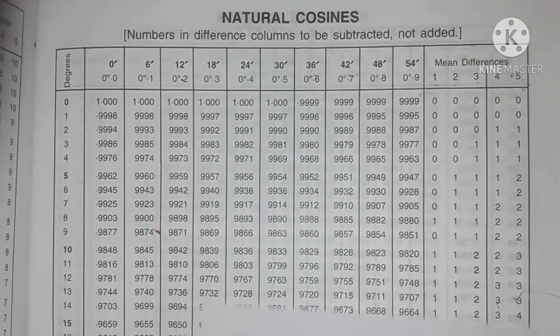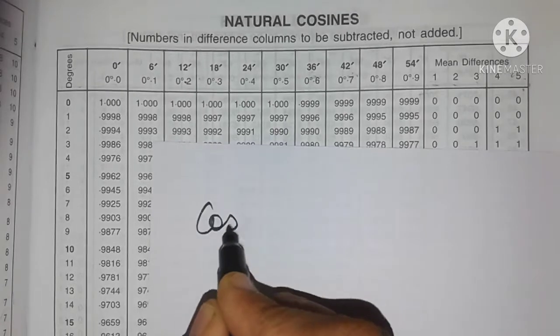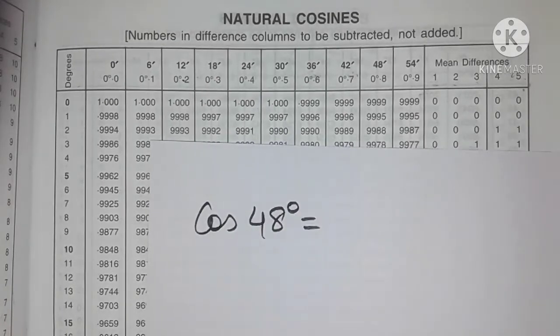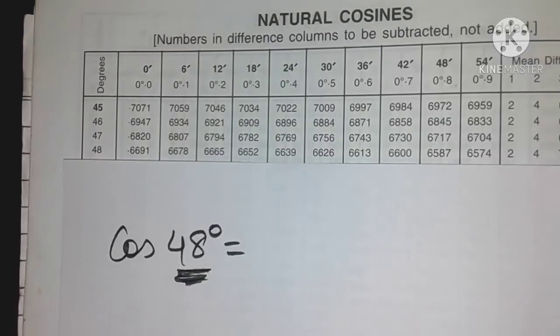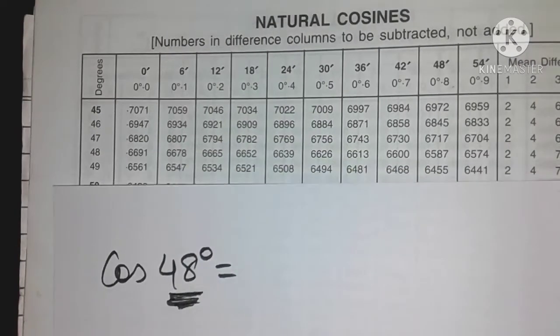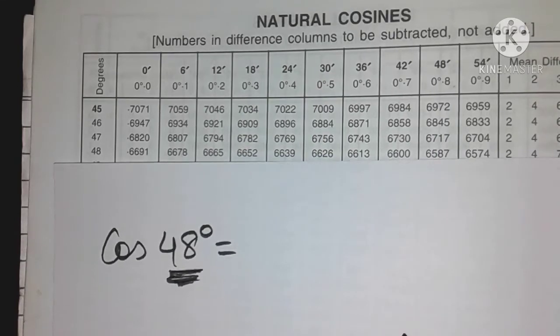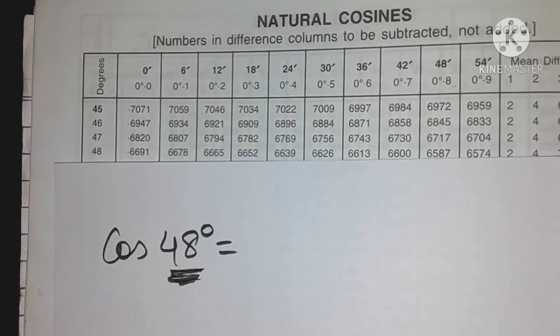Now suppose friends I want to find out cos of 48 degrees. The first step is to locate the 48 degree row. So friends here is the 48 degree row. The moment you find your row please hide the remaining rows with paper to avoid confusion.